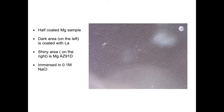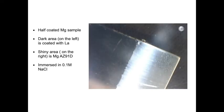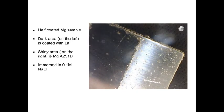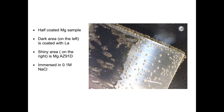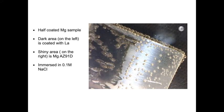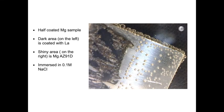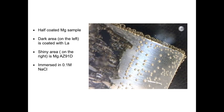An example of how lanthanum can electrochemically protect magnesium is seen here and I have to admit I never ever ever ever get sick of watching this video. So what you'll see here is a half coated magnesium sample and the dark area on the left is coated with lanthanum and this is immersed in a sodium chloride solution. The shiny area that you see on the right is magnesium alloy AZ91D and what we see over a period of time in this video I'm just going to speed it up manually is the protection afforded by the film the lanthanum metal film being dissolved in a sacrificial manner so this is a really really really really cool video.